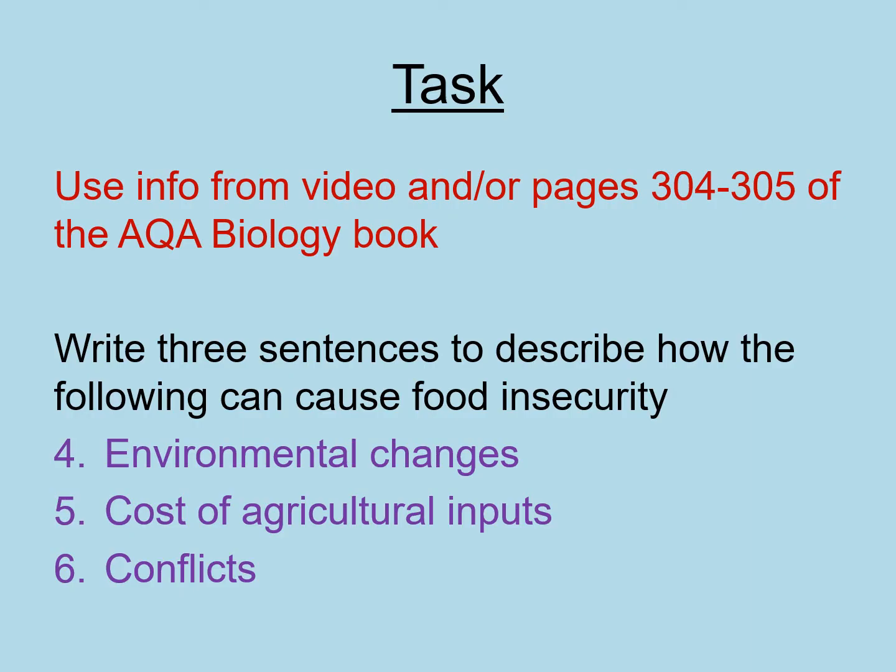For the last part of your task, using information from the video or pages 304–305 of the AQA book, write three sentences describing how the following can cause food insecurity: environmental changes, the cost of agricultural inputs, and conflicts. Pause the video, write your sentences for each, then press play when ready.